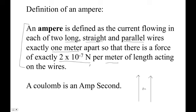Understand that an ampere is actually defined in terms of a newton. A newton is a kilogram meter per second squared. A meter is how far light travels in so many seconds. A second is, conceptually, so many vibrations of a cesium atom. A kilogram still defies conceptual definition.